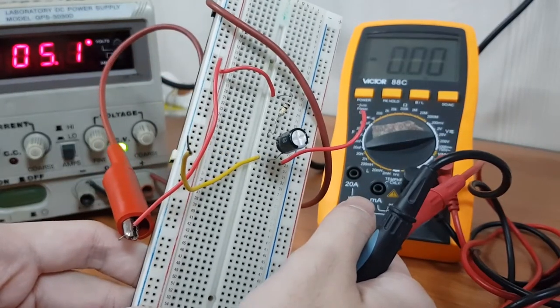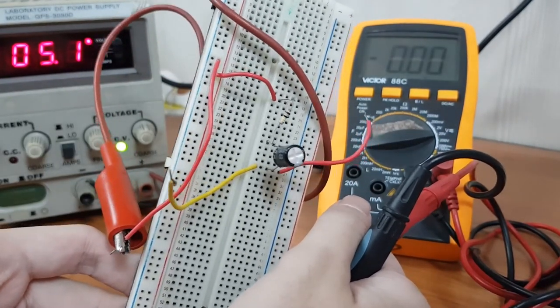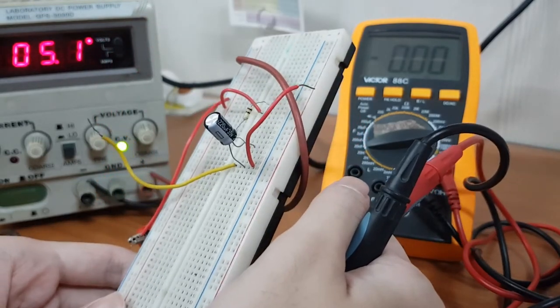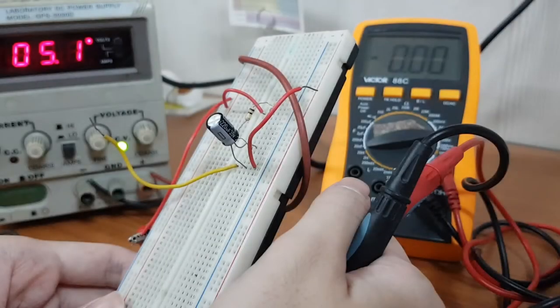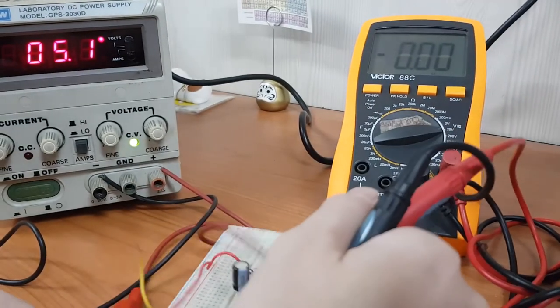we're going to use a breadboard, multimeter, and our DC power supply. We have here an electrolytic capacitor with a value of 220 microfarad together with a resistor with a value of 100 kilo ohm.